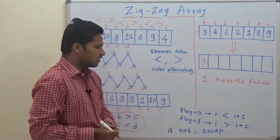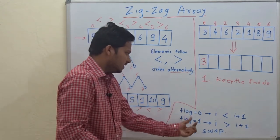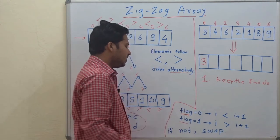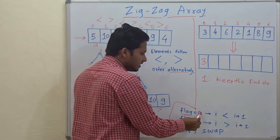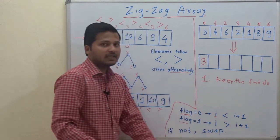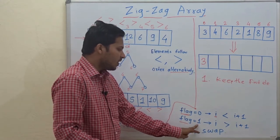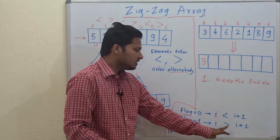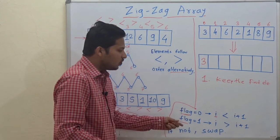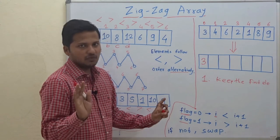Now the algorithm starts. I am going to use a flag. Whenever the flag is 0, the current element should be less than the next element. Whenever the flag is 1, the current element should be greater than the next element. This flag will alternatively change between 0 and 1 — flag = not(flag).